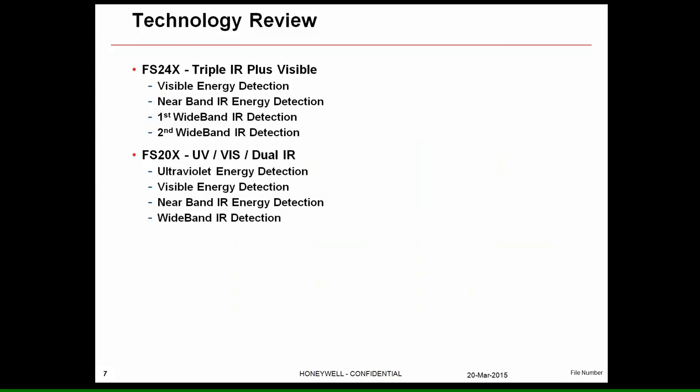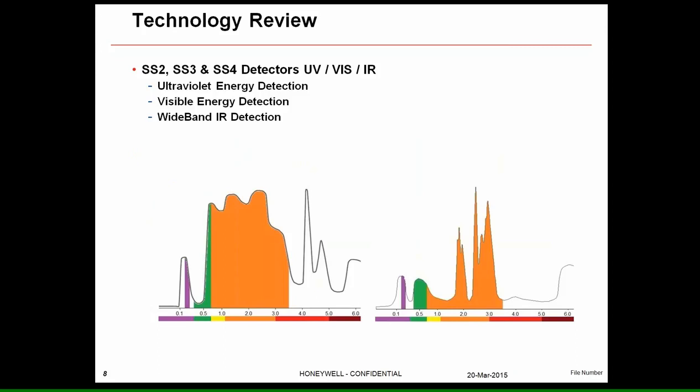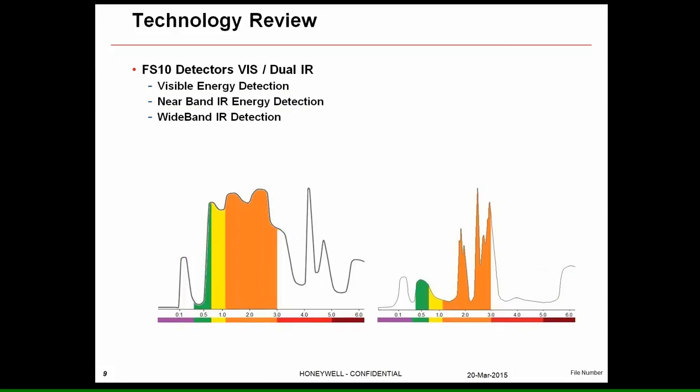When we talk about the technology we use, the IIIR+ looks at the visible region, near-infrared, and two separate wide bands. Our UV/IR is actually a UV dual IR — it looks at ultraviolet, visible, and near-infrared energy, plus a wide-band infrared section. These are all broad-spectrum regions, not narrow bands — very broad bands of energy that we look at.